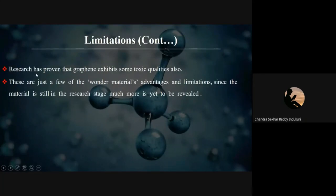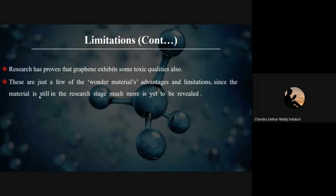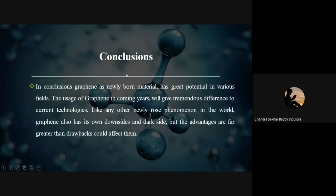Research has proven that graphene also exhibits some toxic qualities. These are some of the limitations and advantages of this wonder material. Since the material is still in the research stage, much more is yet to be revealed. Through these advantages and limitations, we can observe that graphene nanotechnology is still in its initial stage, meaning there is a great chance to do research in graphene nanotechnology across a wide variety of applications. In conclusion, graphene is a newly born material with great potential.